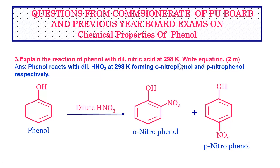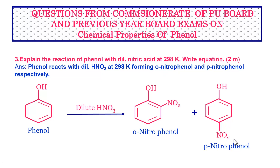Next question: explain the reaction of phenol with dilute nitric acid at 298 Kelvin. Write the equation. This is a question for two marks. We know that this reaction is an electrophilic aromatic substitution reaction, wherein phenol reacts with dilute nitric acid at about 298 Kelvin forming orthonitrophenol and paranitrophenol. Orthonitrophenol is obtained in minor quantity.